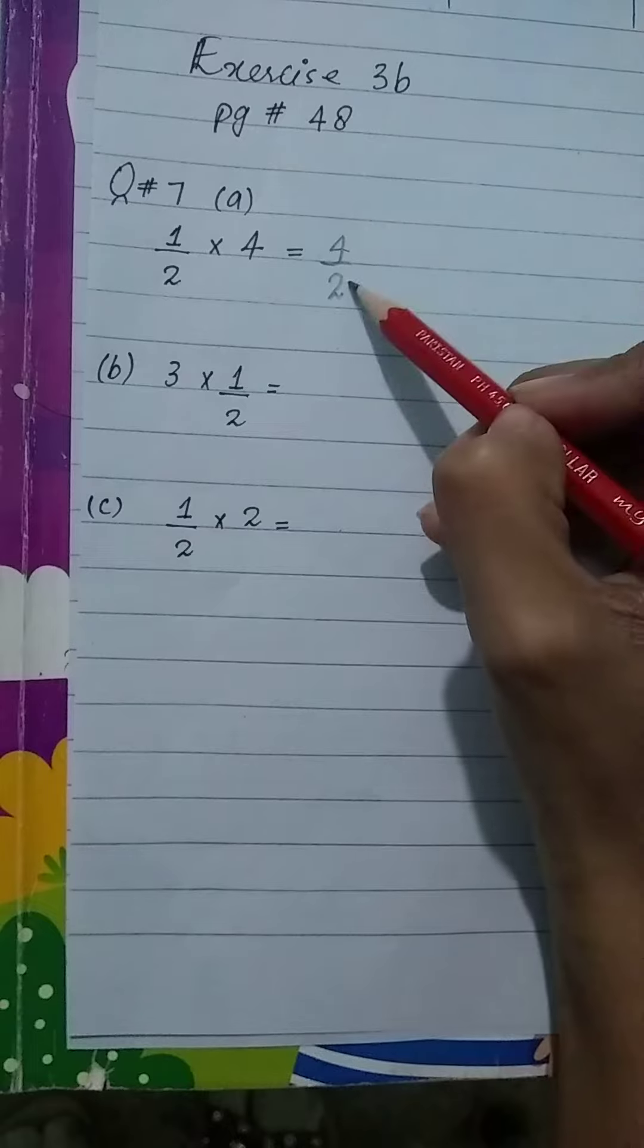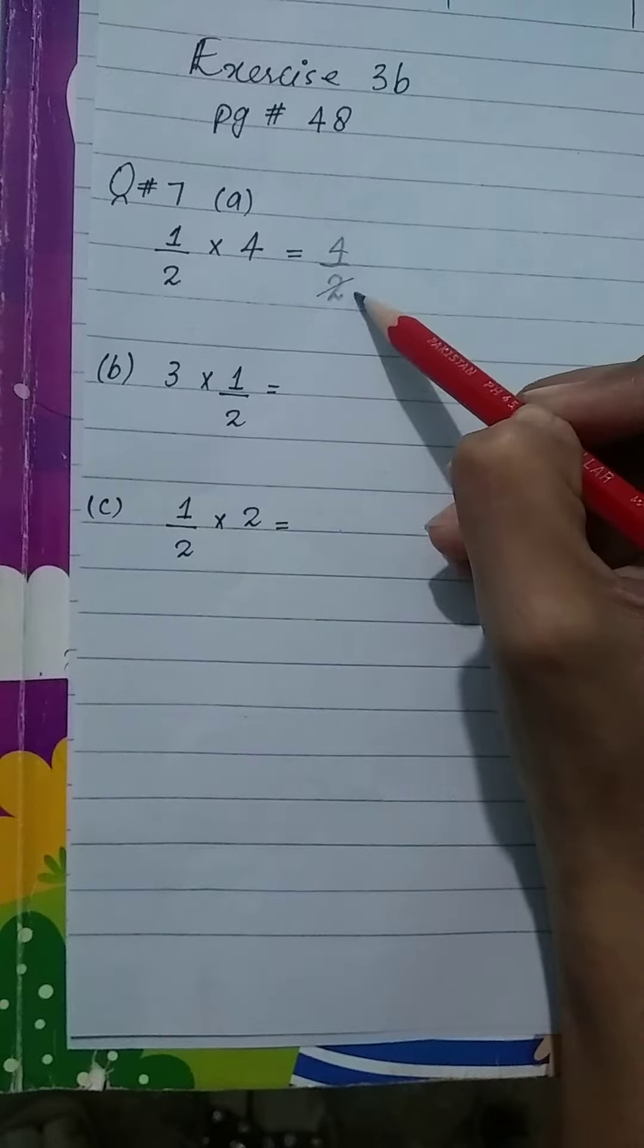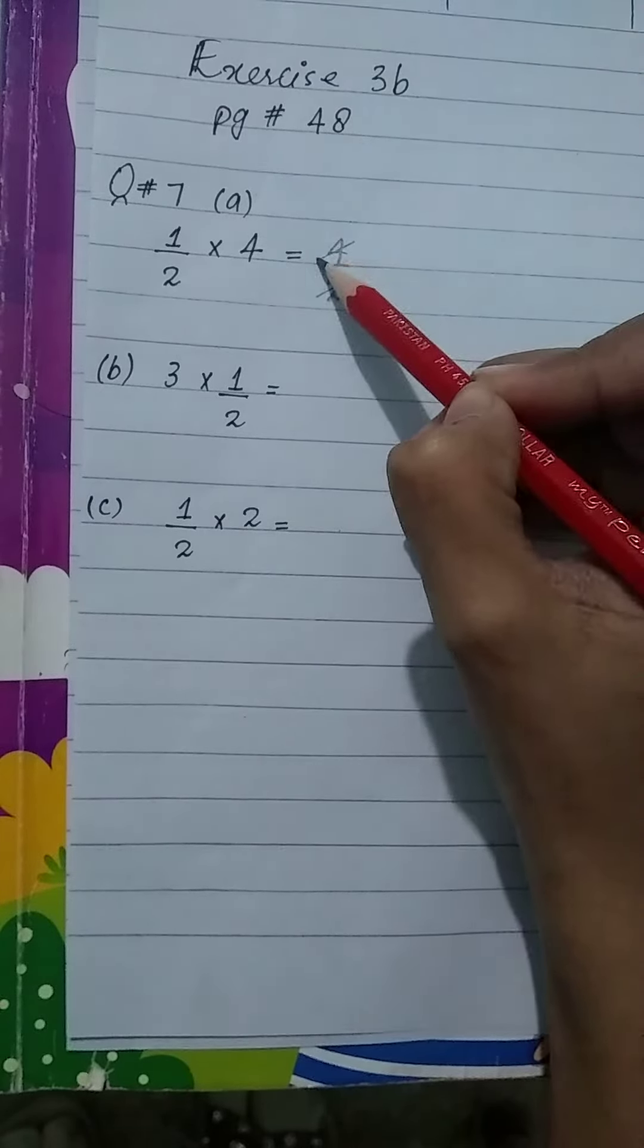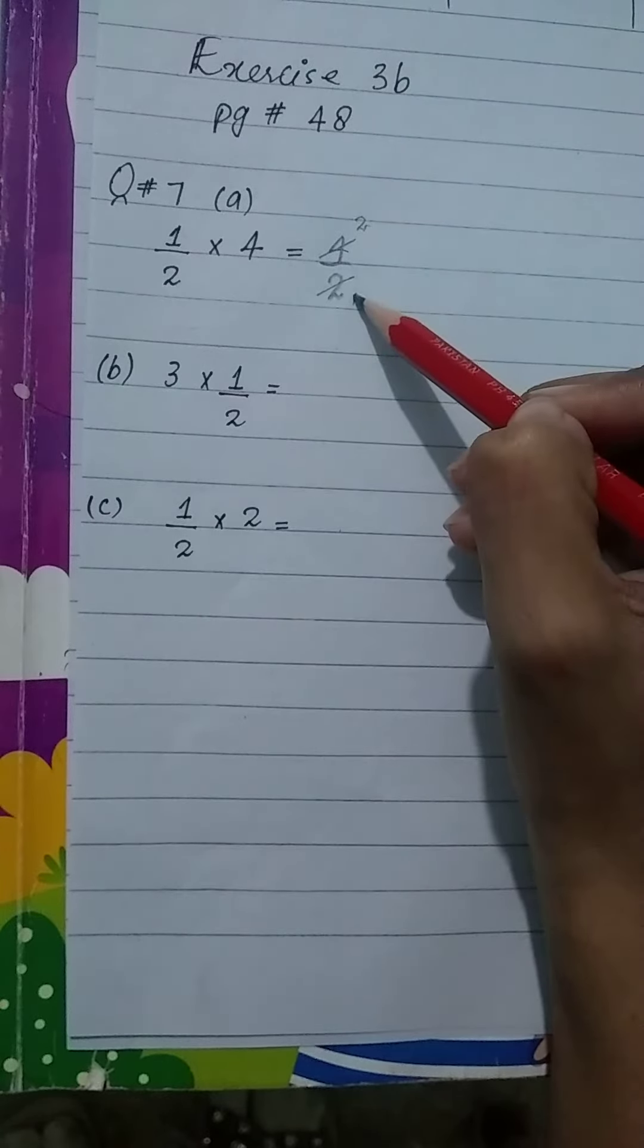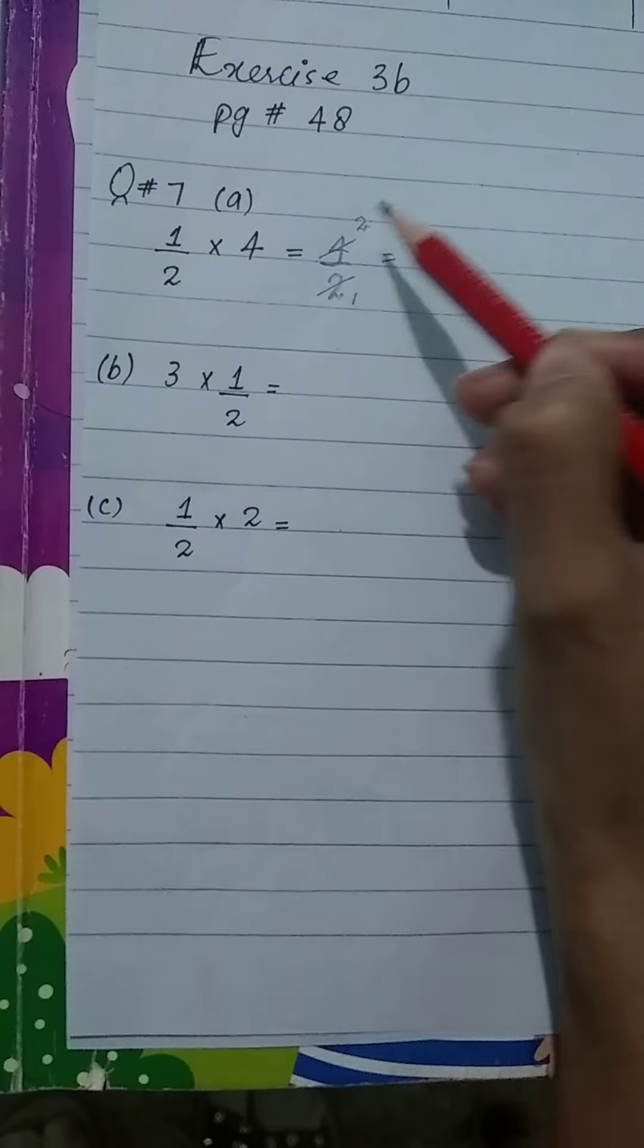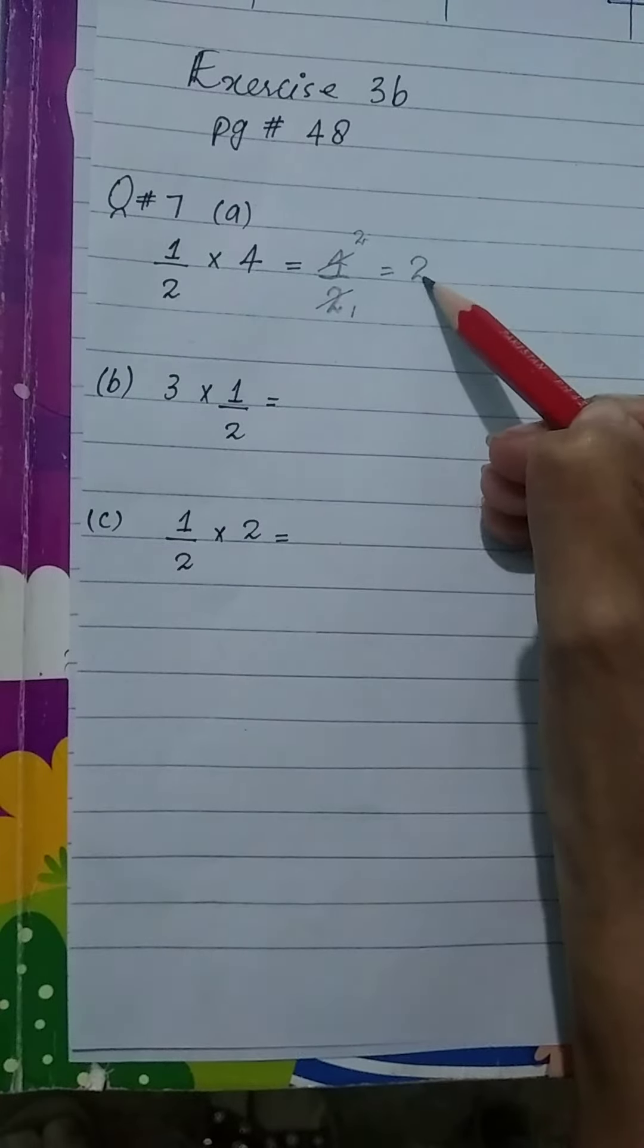Now let's cancel it from the same table. 2 ones are 2, 2 twos are 4. We will be talking about the denominator. The answer is 2.